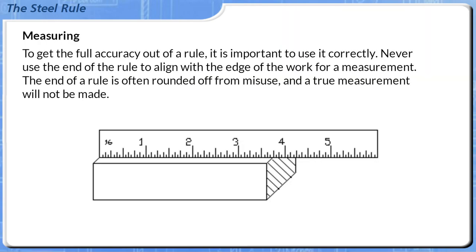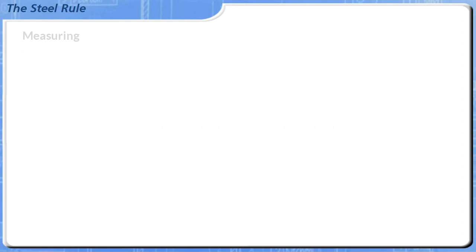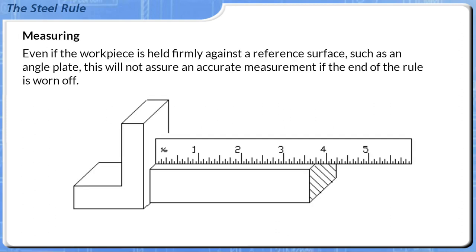To get the full accuracy out of a rule, it is important to use it correctly. Never use the end of the rule to align with the edge of the work for a measurement. The end of a rule is often rounded off from misuse, and a true measurement will not be made. Even if the workpiece is held firmly against a reference surface, such as an angle plate, this will not assure an accurate measurement if the end of the rule is worn off.